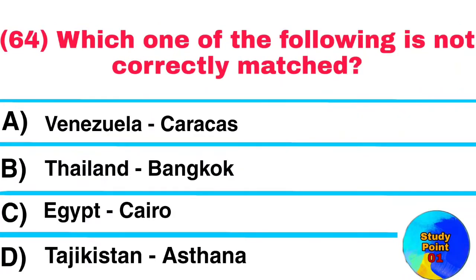Question No. 64. Which one of the following is not correctly matched? Answer: Tajikistan — Astana.